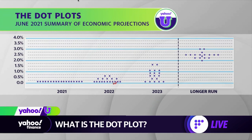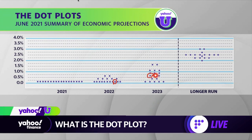People tend to look at the median member of that 18-member committee for where interest rates could be going. If you look at the median dot for 2022, that's showing no interest rate hikes — it's still pinned at near zero. But if you look at the median dot for 2023, it shows two interest rate hikes over that period of time. And this is the dot that got people freaked out.